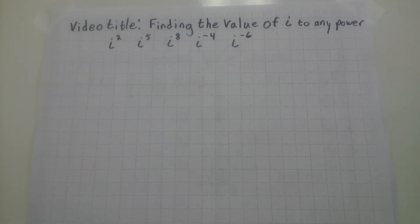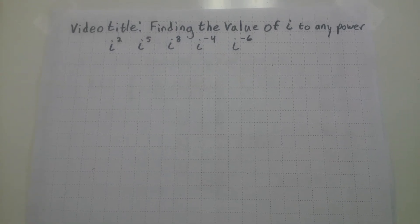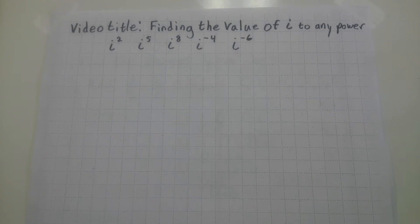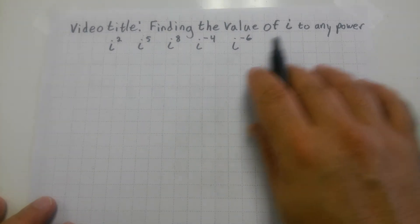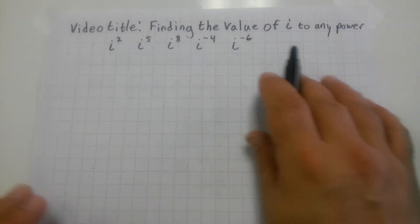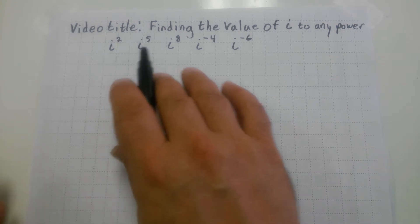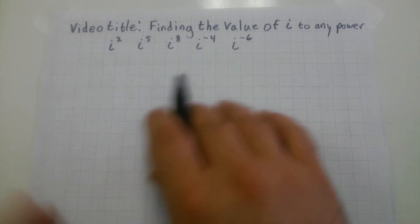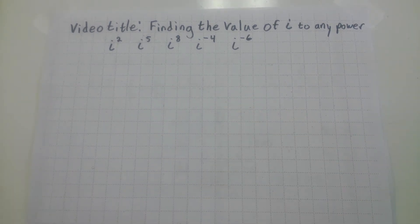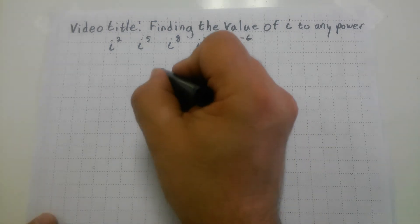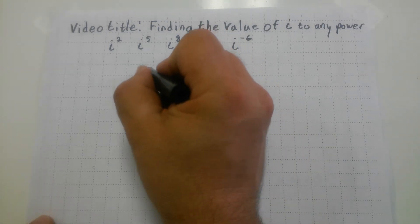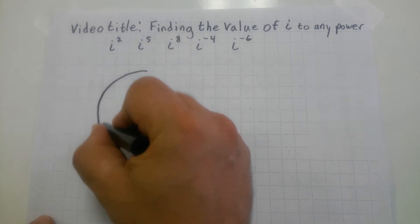Hello. What I want to do here is find the value of i to any power — for instance, i squared, i to the fifth, i to the eighth. I want to have a nice way of finding i to any power, and in order to do that, I'm going to use something called the i circle.